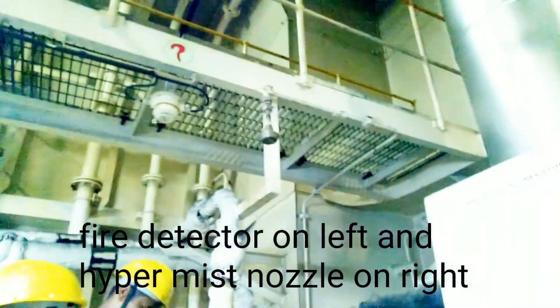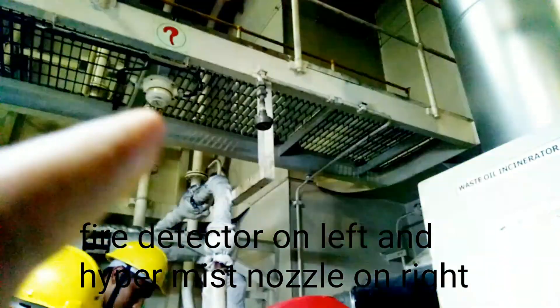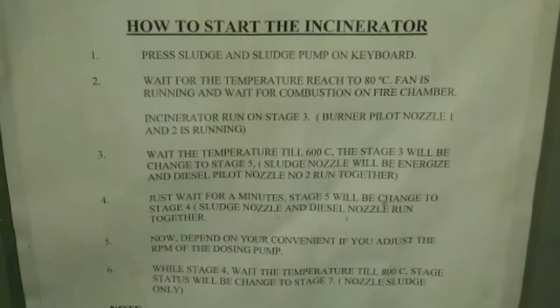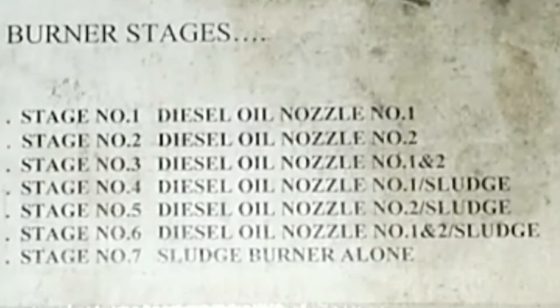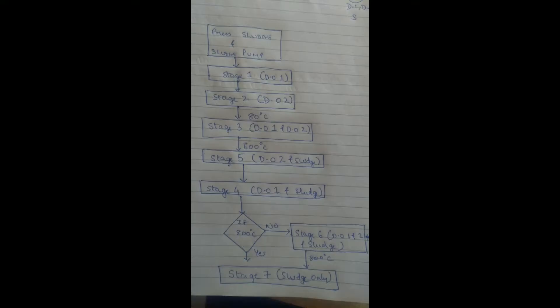Here you can also see a smoke detector, fire detector, and hypermist system. This is your starting procedure — you can read how to start. Basically, you press the burner switch and it goes to stage one, then stage two, then stage five, and the process continues from there.